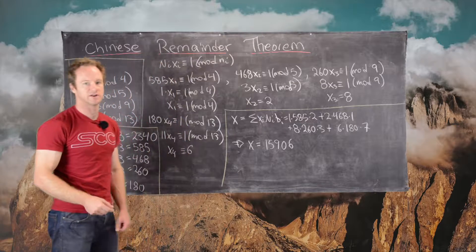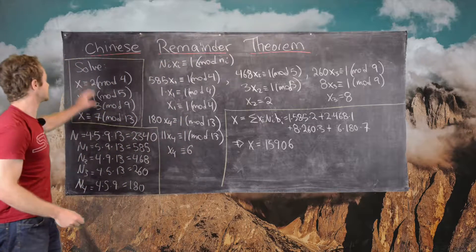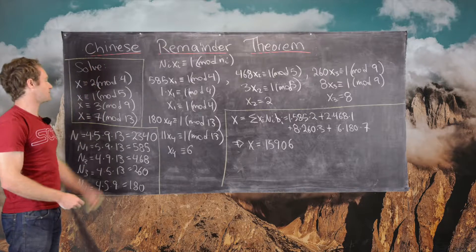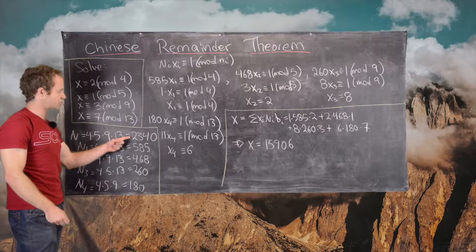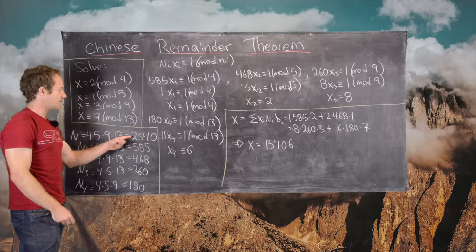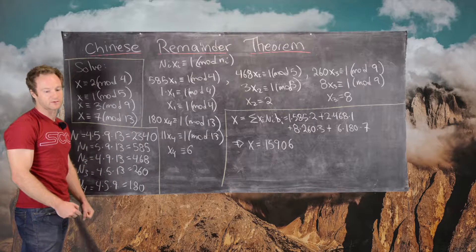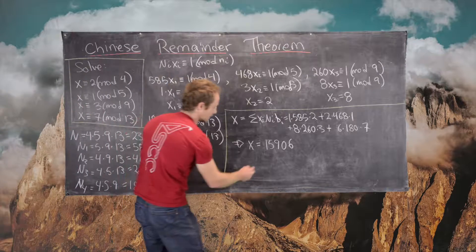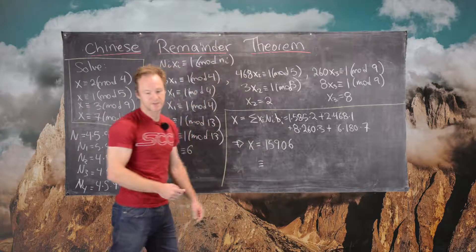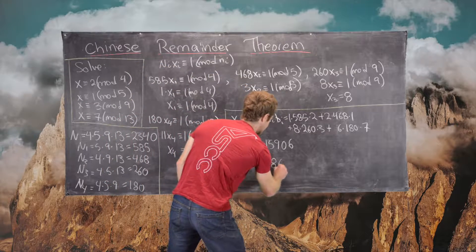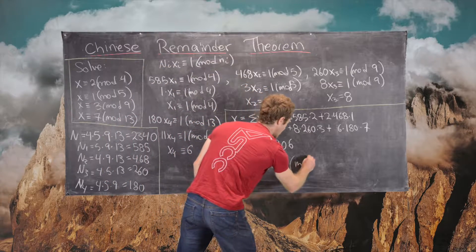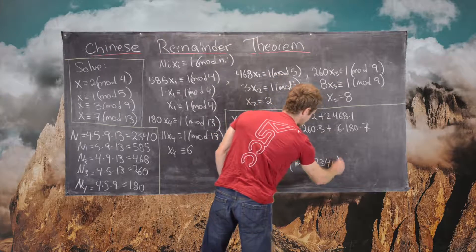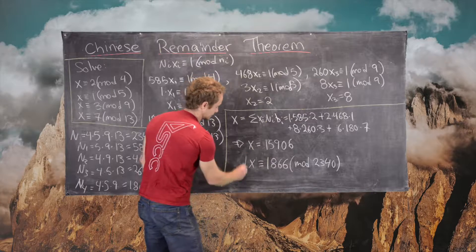So 15,906 is a solution to this system of linear congruences. But the Chinese remainder theorem says that this solution should be unique modulo 2,340. So we can reduce this modulo 2,340, and that is our final solution.